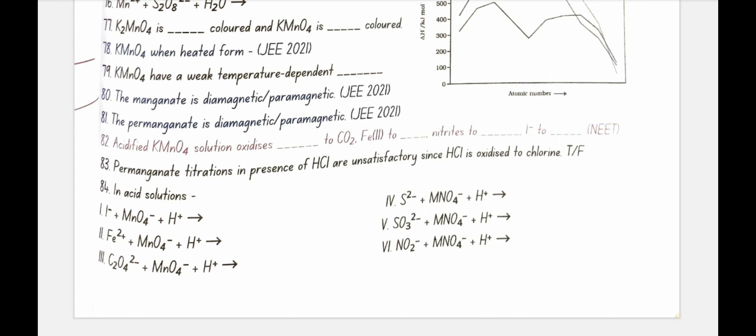The manganate is diamagnetic or paramagnetic? Paramagnetic. The permanganate is diamagnetic or paramagnetic? The permanganate is diamagnetic.